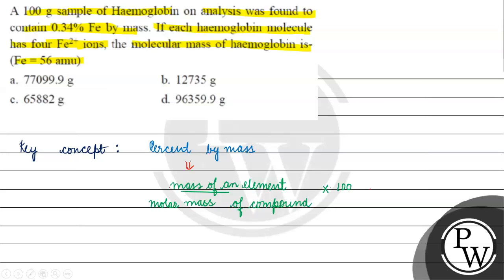Now, let's see in this question what happens in our mass percent. What is our mass percent? Iron. The mass percent is 0.34 percent. Let's write 0.34 percent. Mass of element.